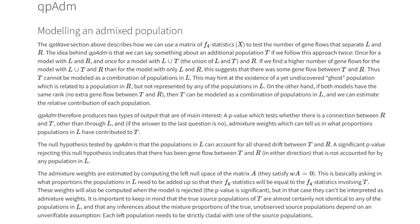CubeADM is a tool that allows researchers to estimate ancestry proportions in a target population using combinations of source populations — left pops — and outgroups — right pops — to constrain the model.